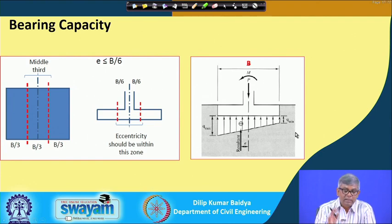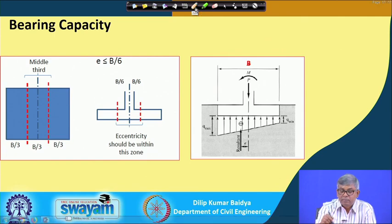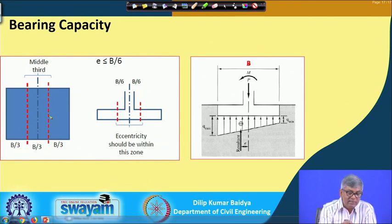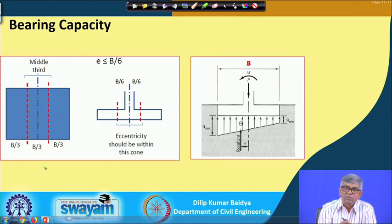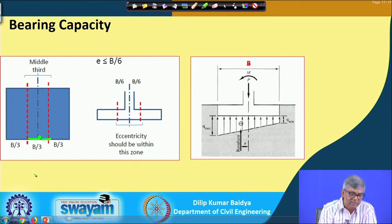The footing width can be divided into three equal parts of B/3 each. The center zone spans B/3 and each side is B/6 from the centroid. This is called the one-third rule. The maximum eccentricity can be B/6 — that is, B/3 multiplied by one-half.